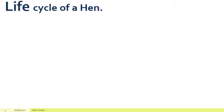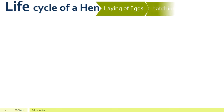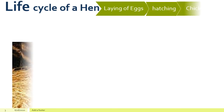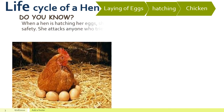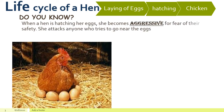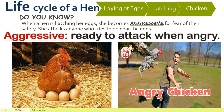You have also learnt the life cycle of a hen. The hen lays its eggs, sits on them to hatch them, and chickens are born from these eggs. But do you know, when a hen is hatching her eggs, she becomes very aggressive if anyone comes near her eggs? She is scared and filled with fear for the safety of her eggs, and she attacks anyone who comes near them. Aggressive means ready to attack when angry.